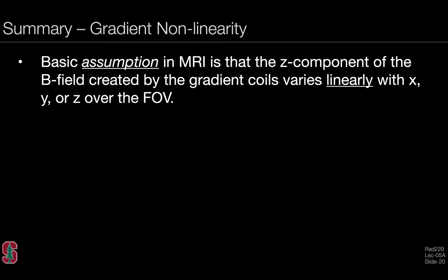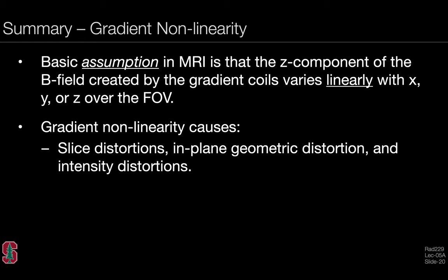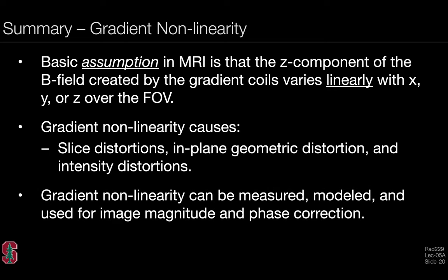In summary, let's remember that there's a basic assumption in MR that the z component of the B field created by the gradient coils varies linearly with x, y, or z over the field of view. In fact, we know our gradients to be nonlinear, and gradient nonlinearity causes several problems including slice distortions, in-plane geometric distortion, and intensity distortions. Gradient nonlinearity can be measured, modeled, and used for image magnitude and phase correction. We didn't spend a lot of time talking about phase corrections, but any time the magnitude of our signal is corrupted, the phase is corrupted as well.